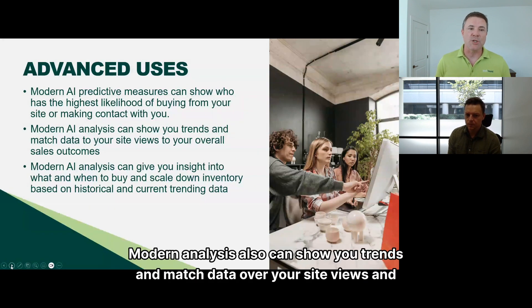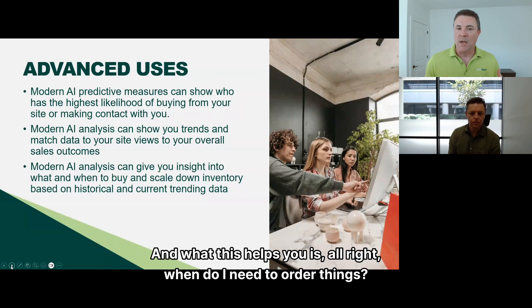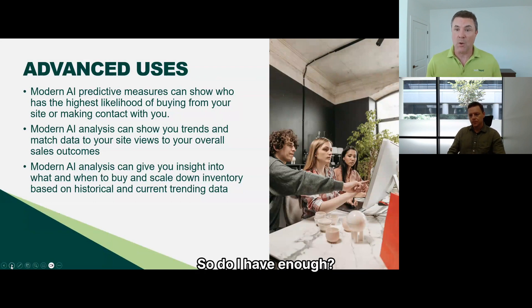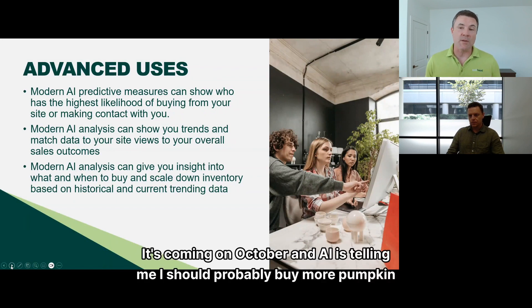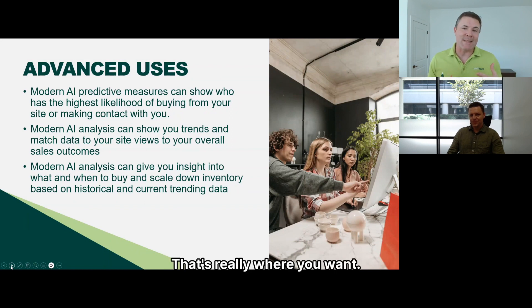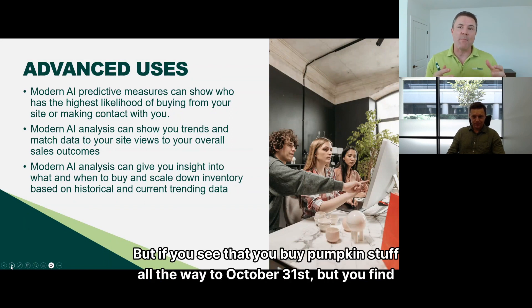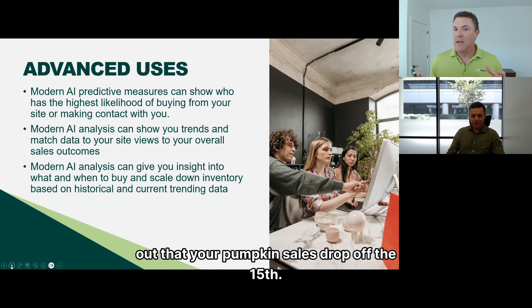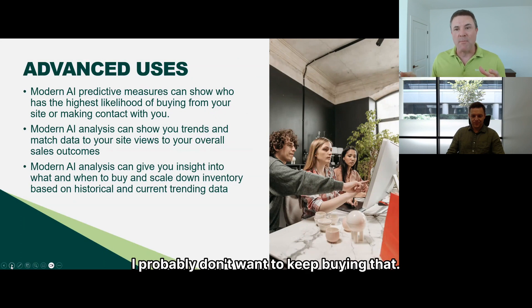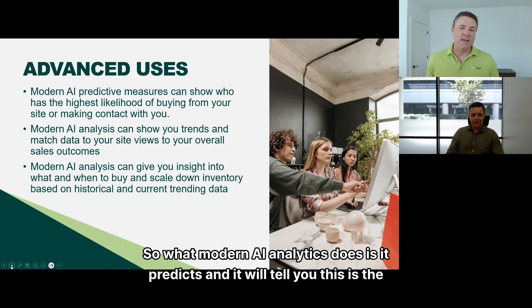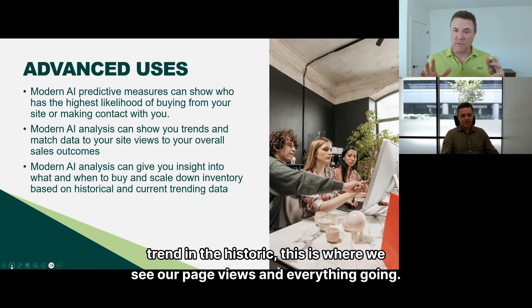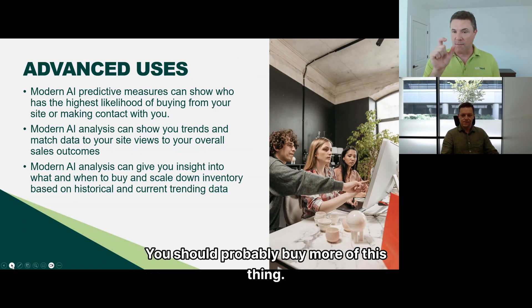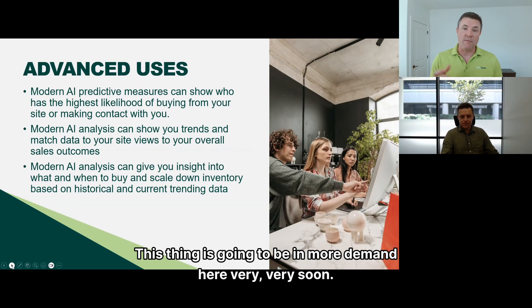Modern analysis can also show you trends and match data across site views and overall sales outcomes. This helps with inventory decisions — for example, AI might tell you it's coming on October and you should buy more pumpkin items, but if your data shows pumpkin sales drop off on the 15th, you probably don't want to keep buying past that. AI analytics predicts trends and tells you what will be in more demand very soon.